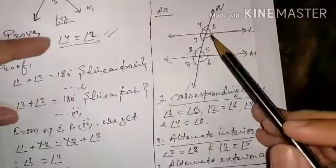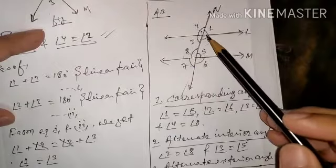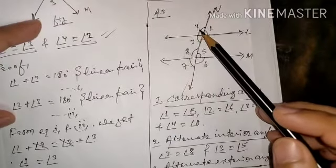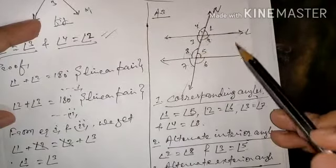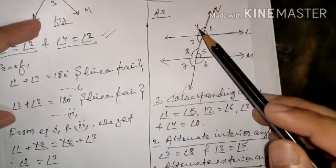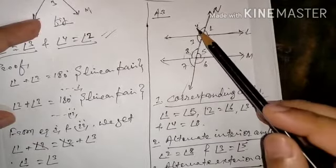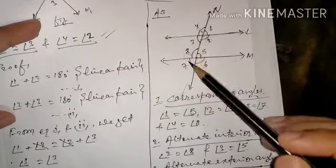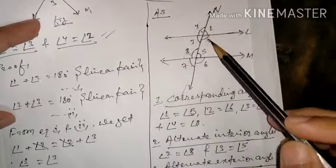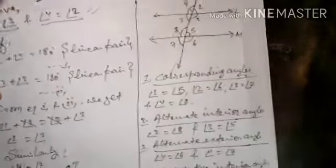To prove angle 2 equals angle 8: angle 2 equals angle 4 by vertically opposite angles. Since the two lines are parallel, angle 8 equals angle 4 by the corresponding angle property. Both angle 2 and angle 8 are equal to angle 4, so by Euclid's axiom they are equal to each other. Similarly, angle 3 equals angle 5.